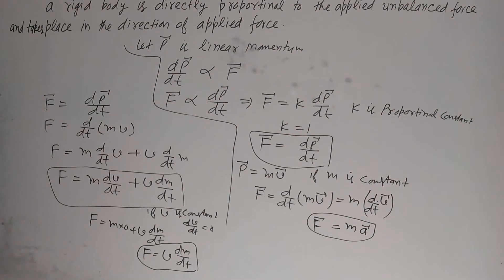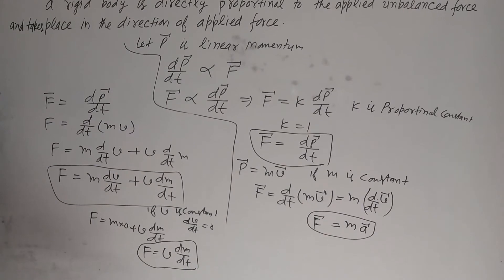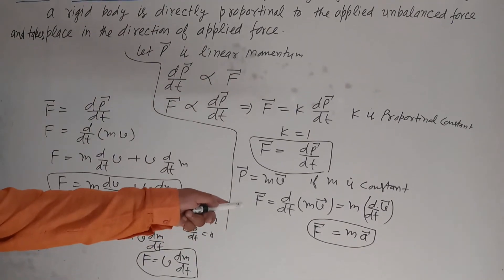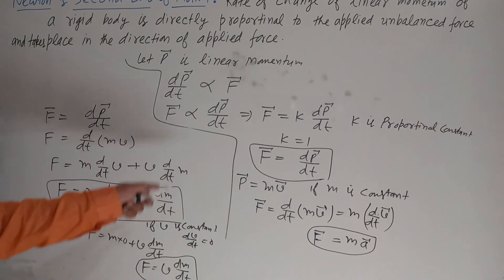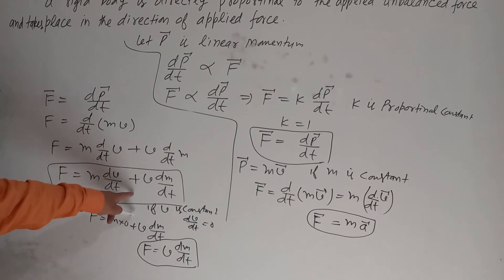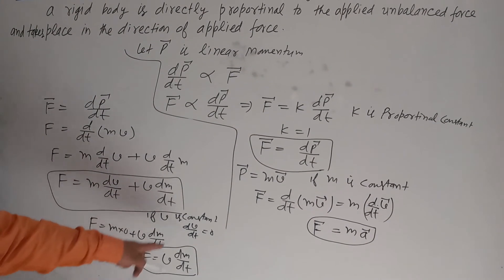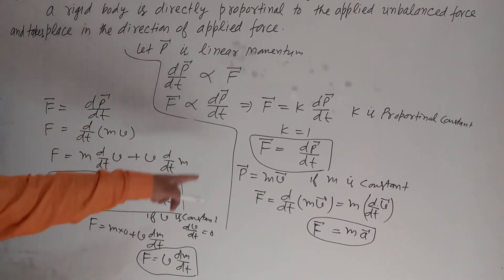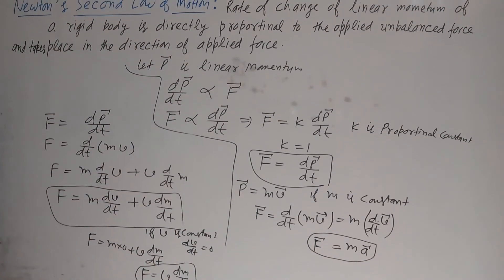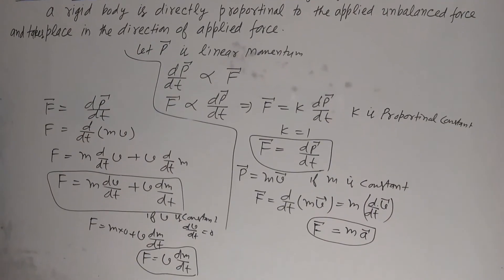So by Newton's Second Law of motion, we have two main formulas: F = MA when mass is constant, F = V·dm/dt when velocity is constant, and the general form F = dp/dt.